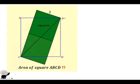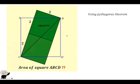We use Pythagorean theorem to find the diagonal of the two smaller squares. Note that the diagonal of the two smaller squares is the same as the diagonal of the bigger square. This side will be 2 and this side will also be 4, because a square has all sides equal. Using Pythagorean theorem, BC² = 2² + 4² = 4 + 16, so BC² = 20.